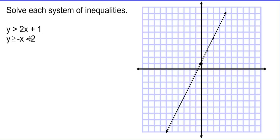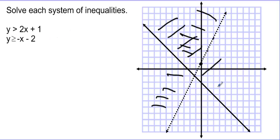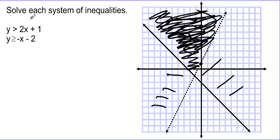The second line has a y-intercept of negative 2 and a slope of negative 1. This one should be solid because we have the equal-to part included. For slope-intercept form, greater than means above the line. So we want above the first line and above the second line. The common area is right here on top, and we shade that region — all those values solve this system of inequalities.